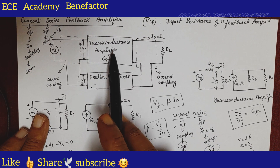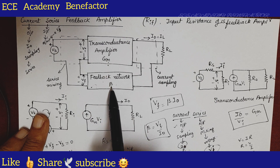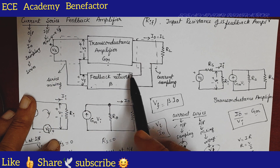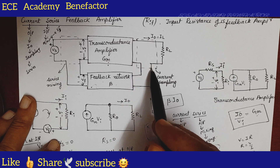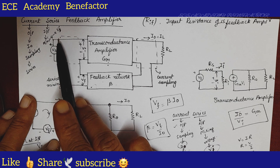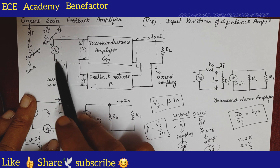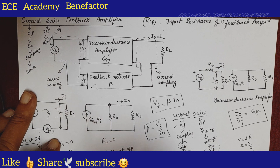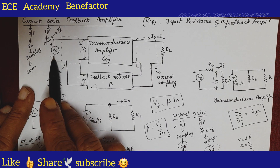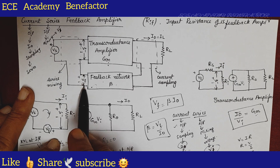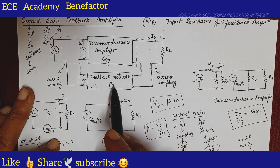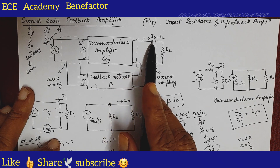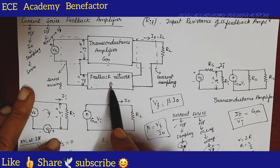There is a transconductance amplifier of gain gm and a feedback network of ratio β. At the output side we have connected RL. In current sampling, the feedback network is connected in series at the output side. For series mixing, the feedback network is also connected in series at the input side. At the input side we have three voltages: Vs, Vi, and Vf. The feedback voltage Vf is a part of the output current, so Vf equals β times I_naught.